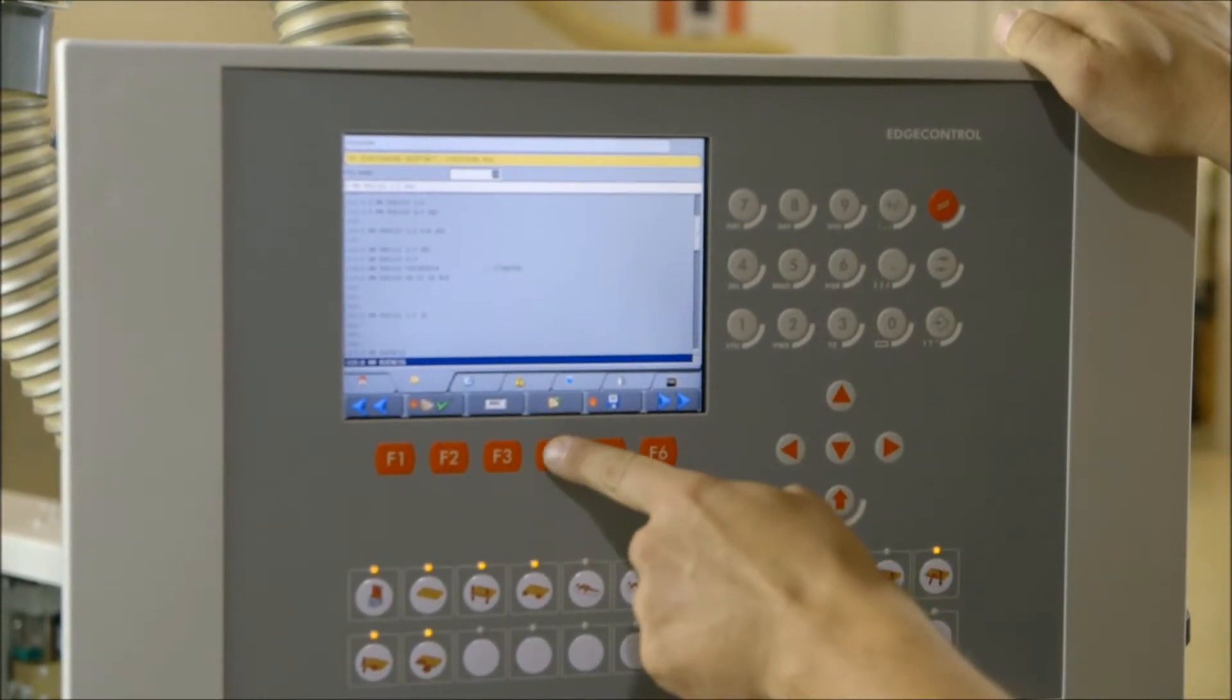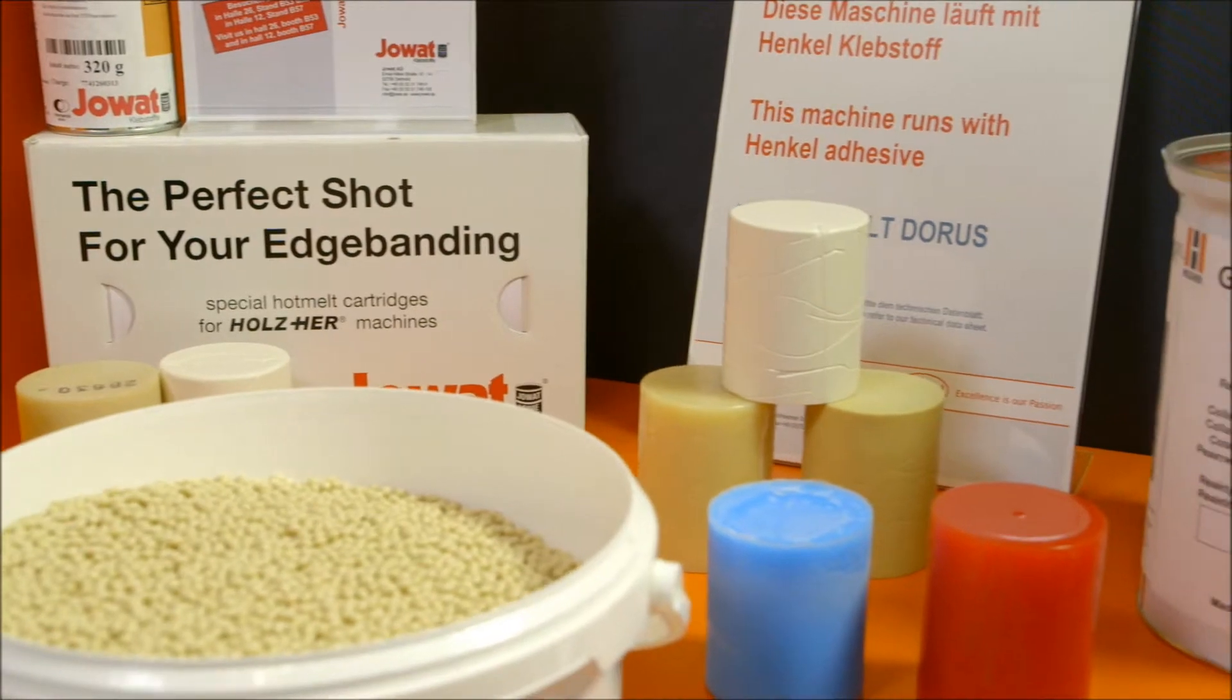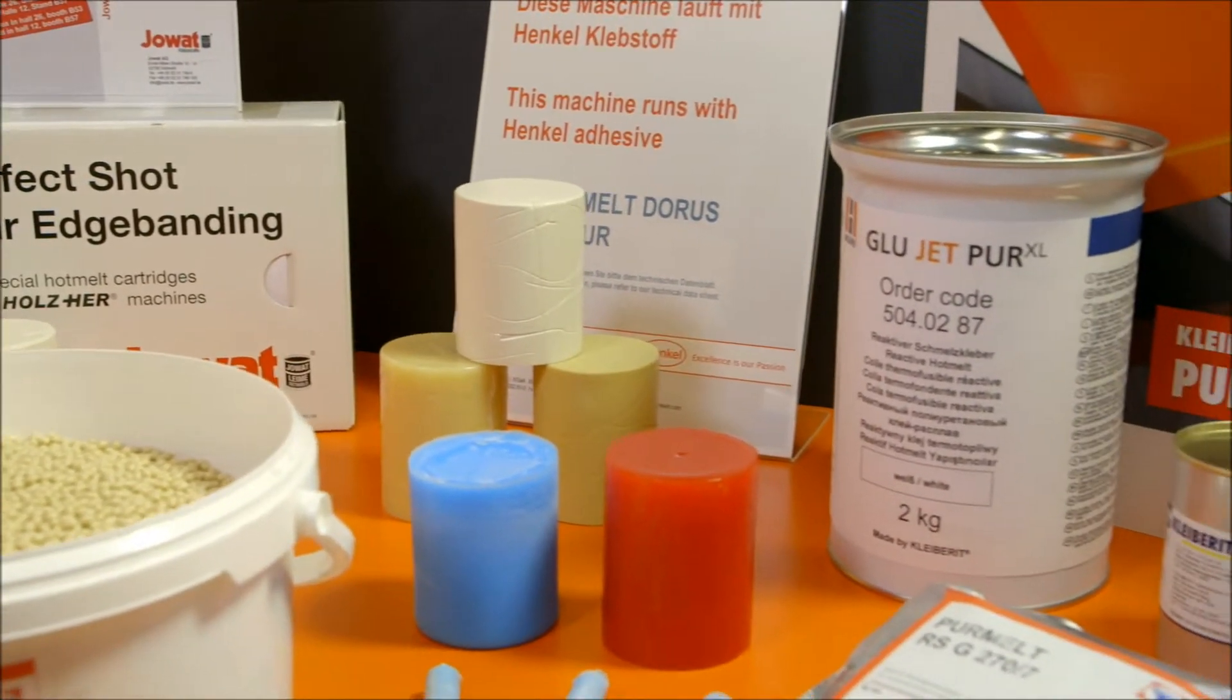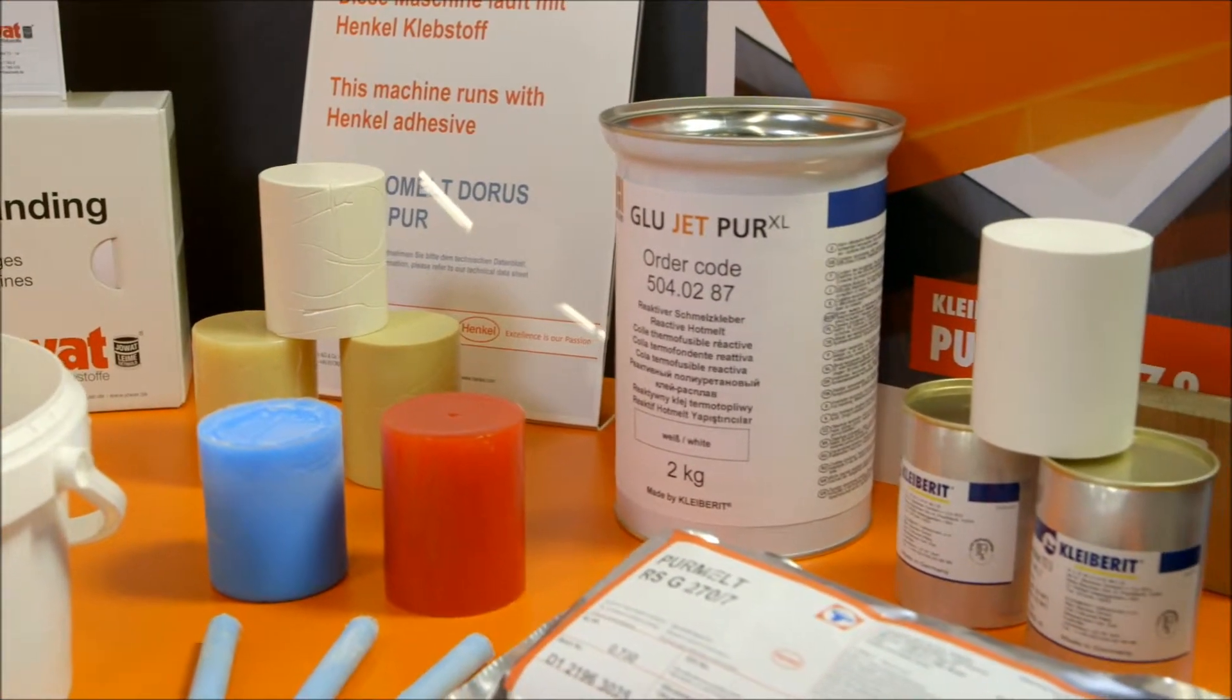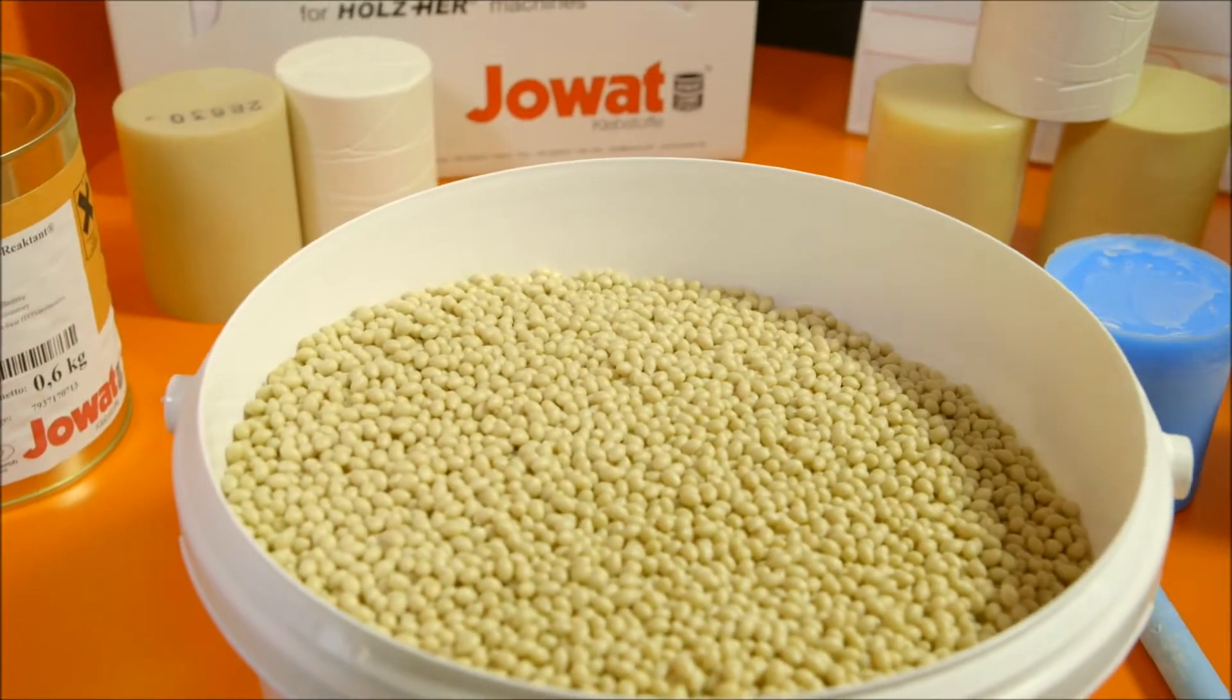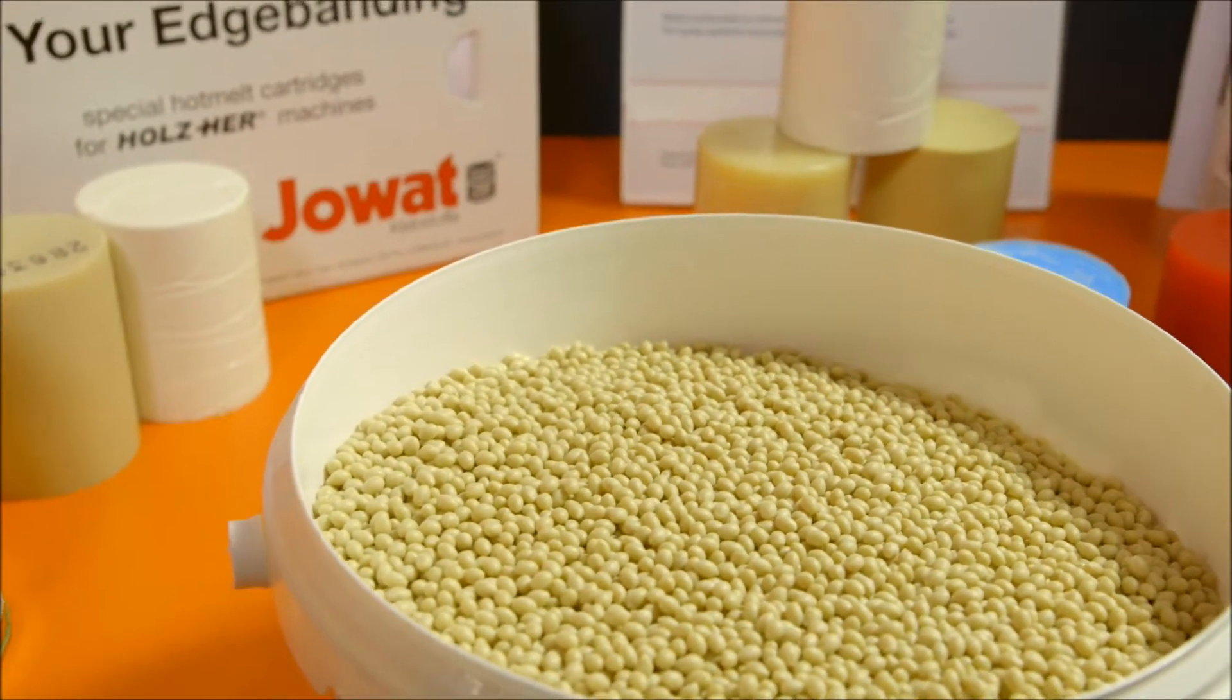Nearly 70 meters of edging can be glued on a 19-millimeter countertop with one 300-gram glue jet cartridge. This means that one kilogram of glue is sufficient for 210 running meters.